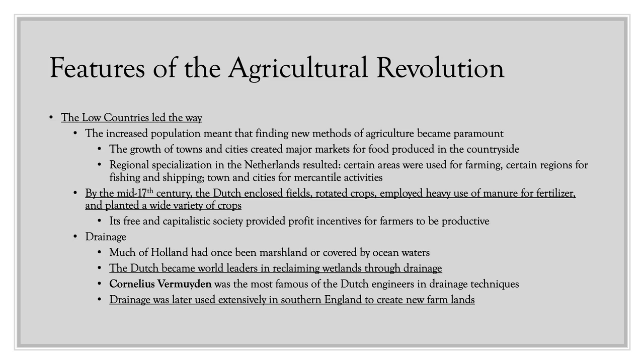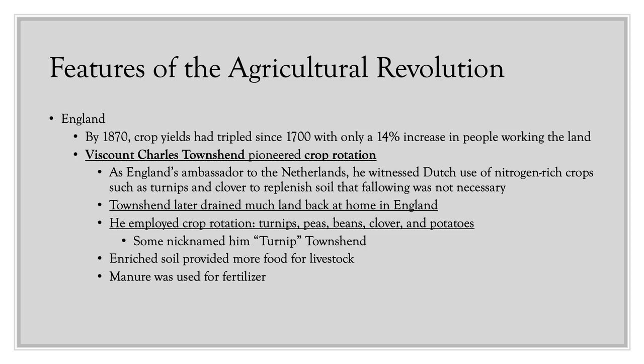The Netherlands also experimented extensively with drainage, because much of Holland along the Atlantic coast was marshland or covered by ocean waters. Parts of the Netherlands are actually below sea level, held back by sea walls called dikes. The Dutch became world leaders in reclaiming wetlands through drainage. Cornelius Vermoeden was the most famous of these Dutch drainage engineers, and drainage techniques were later used extensively in southern England to create new farmlands.